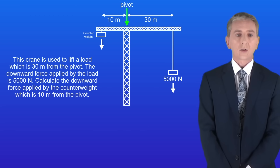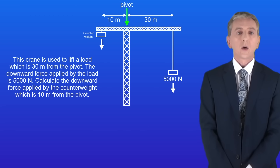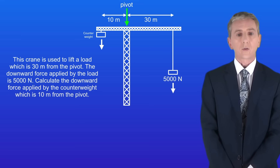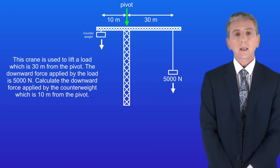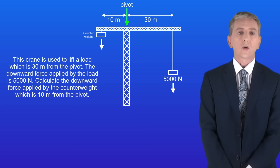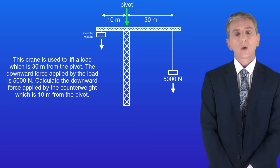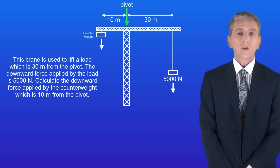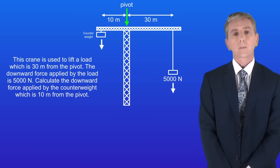Here's a question for you to try. A crane is used to lift a load which is 30 meters from the pivot. The downward force applied by the load is 5000 newtons. Calculate the downward force applied by the counterweight, which is 10 meters from the pivot. Pause the video now and try this question yourself.